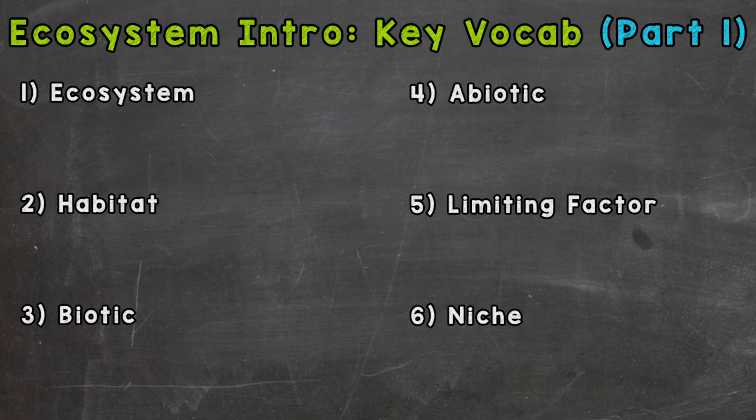And we start off with ecosystem. An ecosystem is made up of all the living and non-living factors within a given area, and all of their interactions. Now ecosystems can be small like a puddle, or large like a rainforest. There's no specific size requirement.